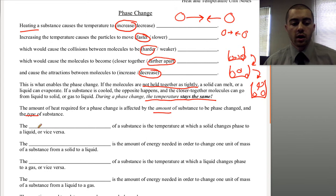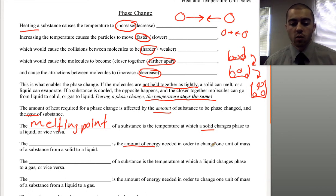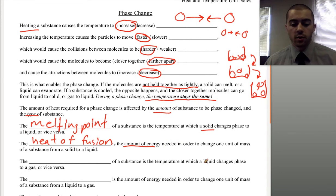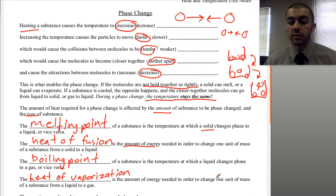When a substance changes from a solid to a liquid, the temperature at which that happens is called the melting point. The amount of energy needed to change one gram from a solid to a liquid is called the heat of fusion. If we're going from a liquid to a gas, the temperature at which that happens is called the boiling point, and the amount of energy needed is called the heat of vaporization — how much energy we need to change one gram from a liquid to a gas.